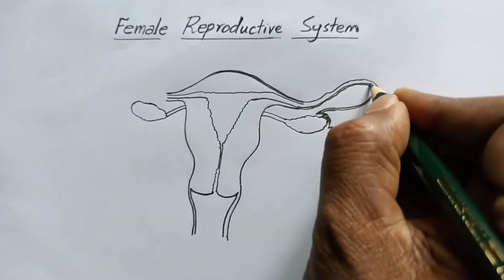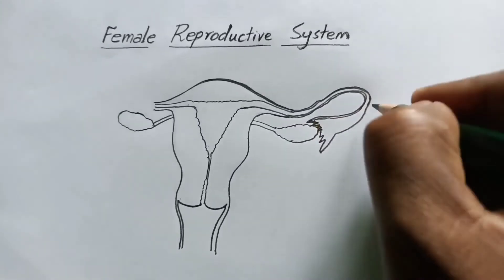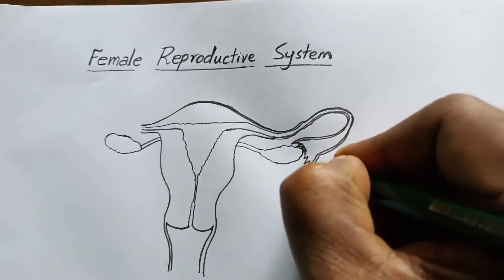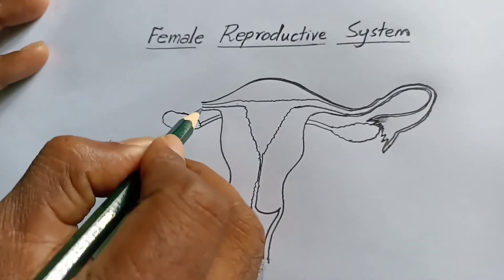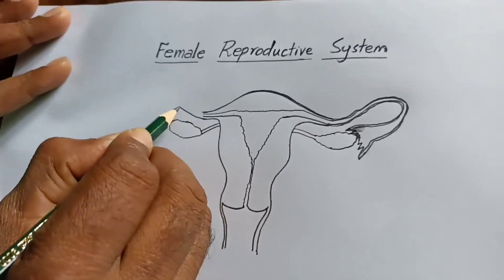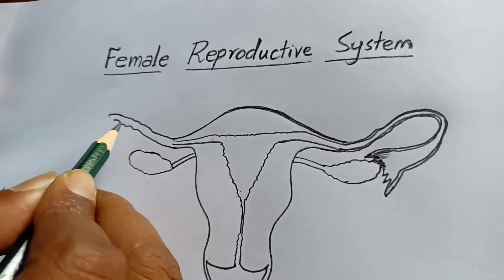It receives eggs from the ovaries through this funnel. I'm drawing double lines. On this side also, you have to draw like this. This is another fallopian tube.